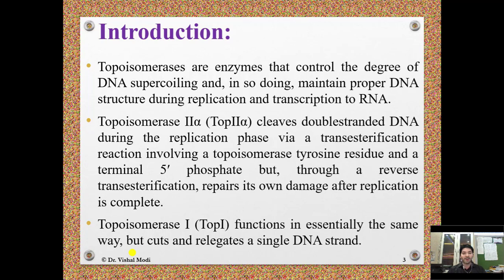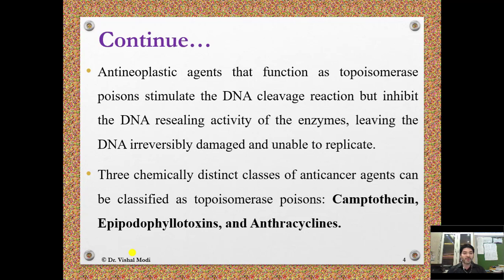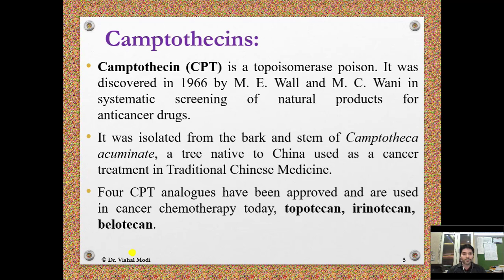Through a reverse transesterification, the enzyme repairs its own damage after replication is complete. Topoisomerase 1 functions in essentially the same way but cuts and relocates a single DNA strand. Antineoplastic agents that function as topoisomerase poisons stimulate the DNA cleavage reaction but inhibit the DNA resealing activity, leaving the DNA irreversibly damaged and unable to replicate. Three chemically distinct classes — camptothecins, epipodophyllotoxins, and anthracyclines — are classified as topoisomerase poisons.